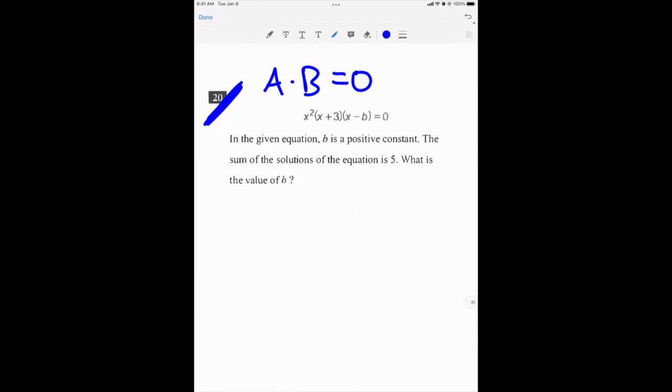Well, look at this. I've got three things that I am multiplying together here. I'm multiplying x squared times x plus three times x minus B, and I'm getting zero.